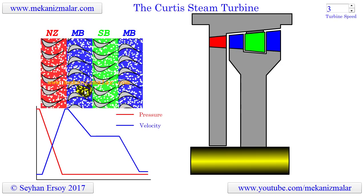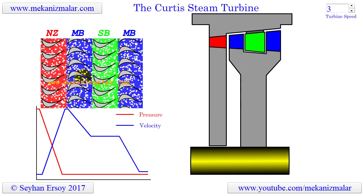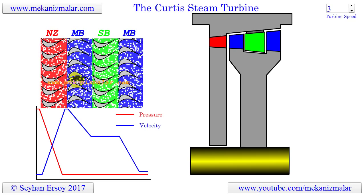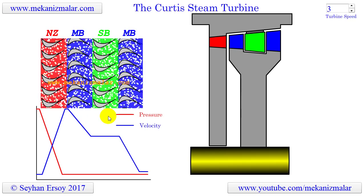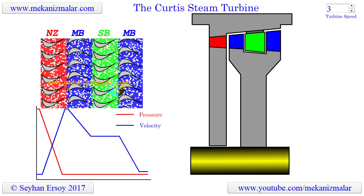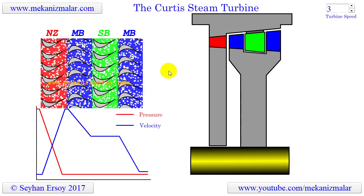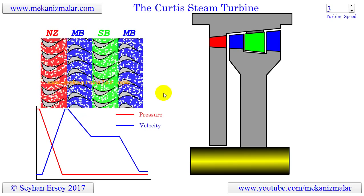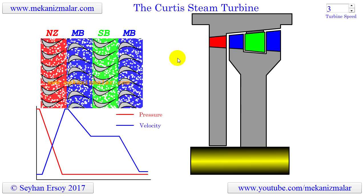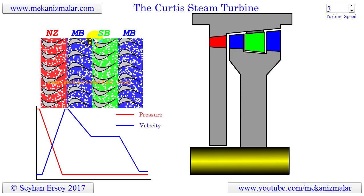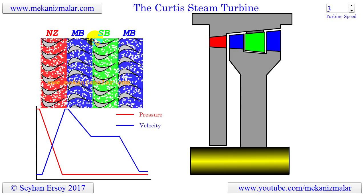In reaction turbines, the steam is ejected from the rotating blades like hot gases ejected from a rocket nozzle. During this process, the rotating blades react to this expelling of the steam by moving in the opposite direction. That is where the name reaction comes from. The Jungstrom turbine mentioned in our previous video is a reaction type turbine.